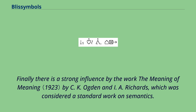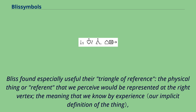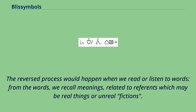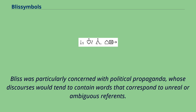Bliss found especially useful their triangle of reference: the physical thing or referent that we perceive would be represented at the right vertex; the meaning that we know by experience at the top vertex; and the physical word that we speak or symbol we write at the left vertex. The reversed process would happen when we read or listen to words — from the words, we recall meanings related to references which may be real things or unreal fictions. Bliss was particularly concerned with political propaganda, whose discourses would tend to contain words that correspond to unreal or ambiguous reference.